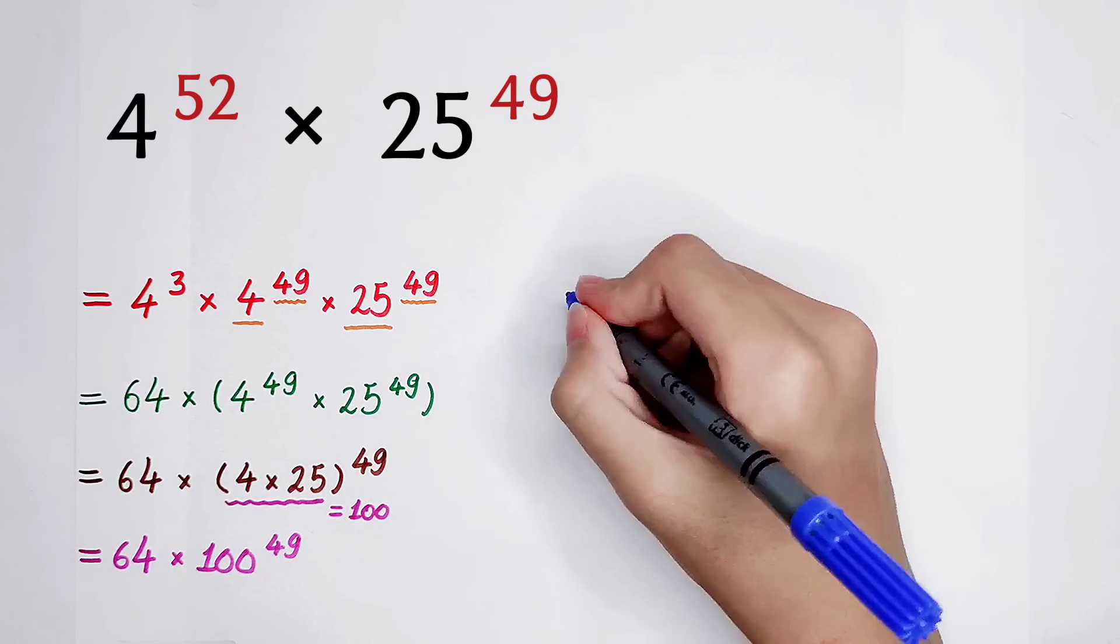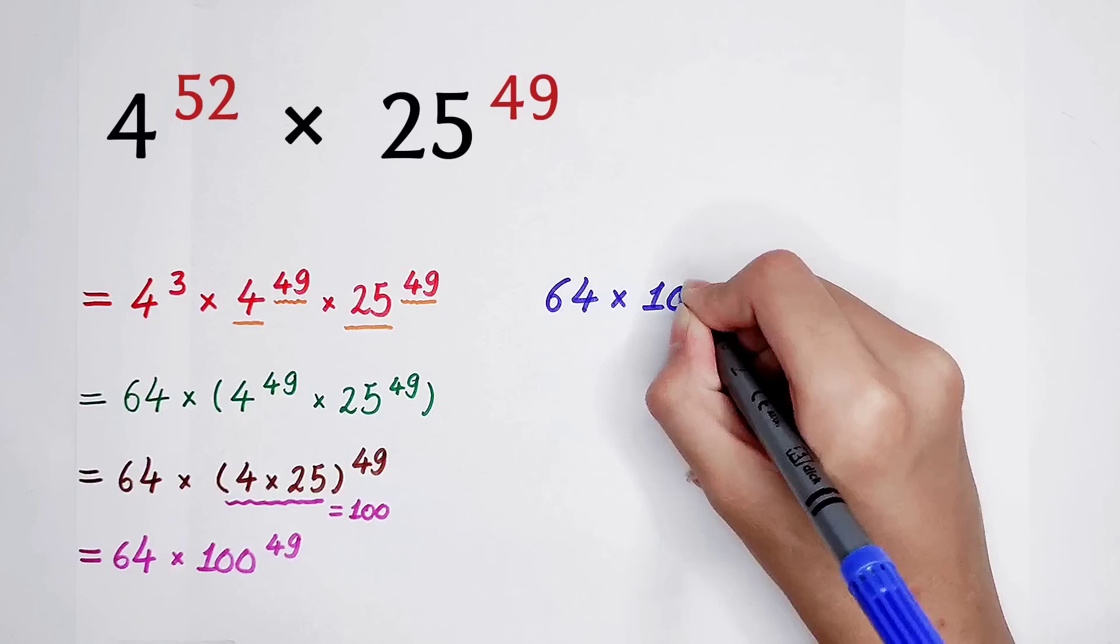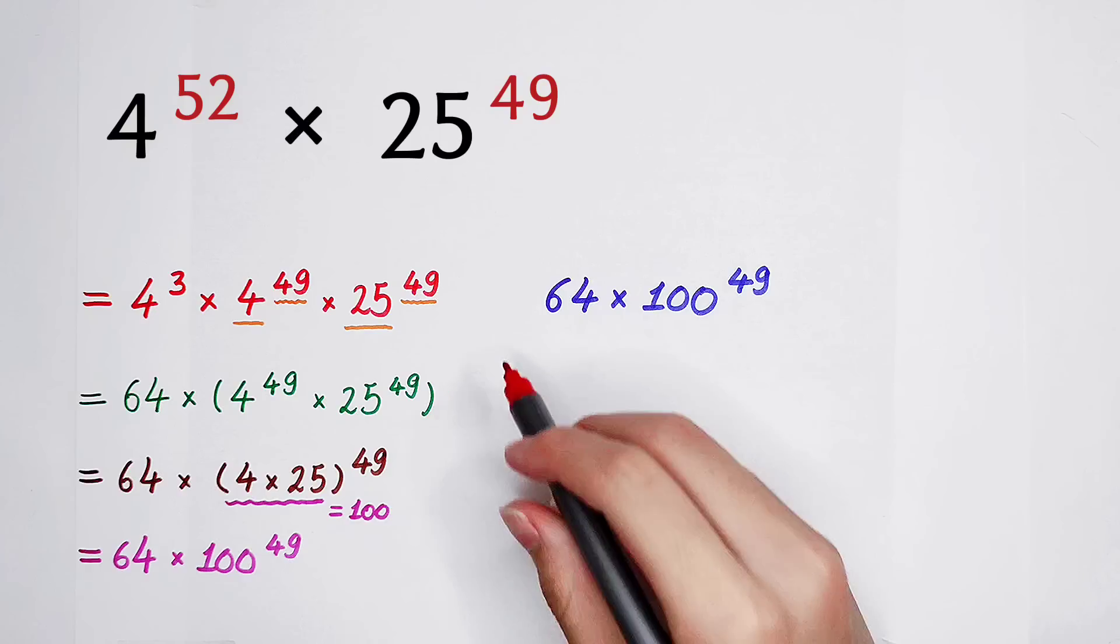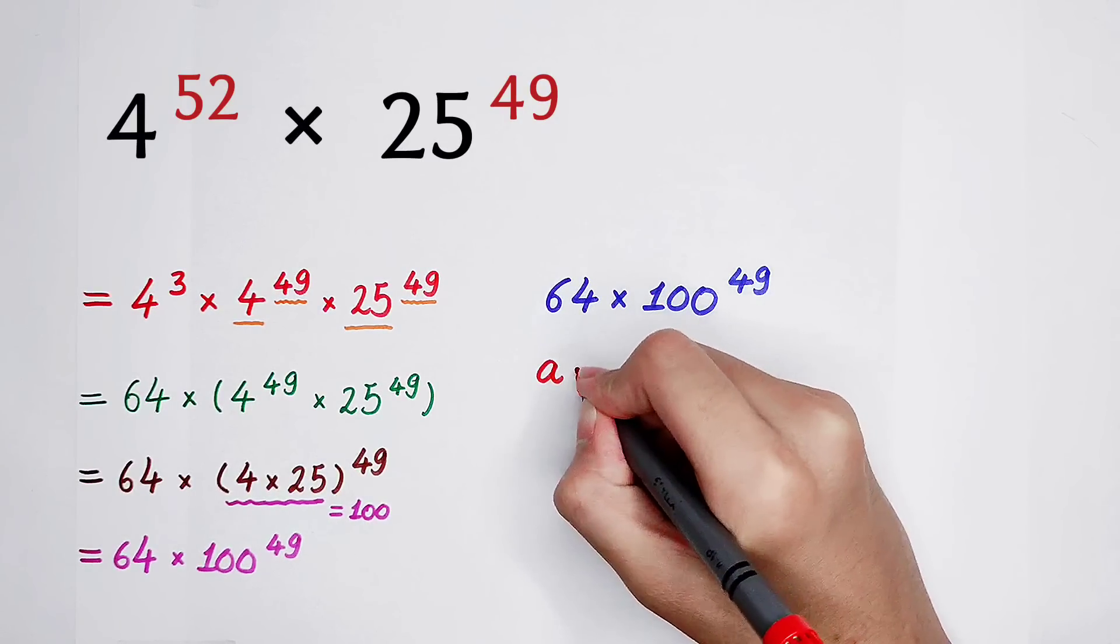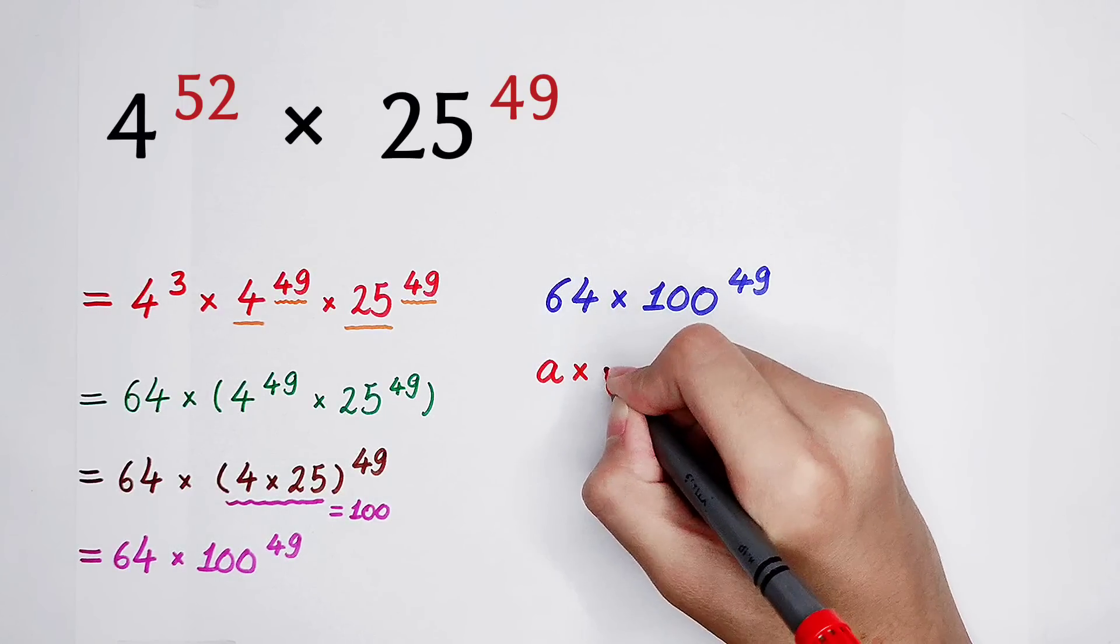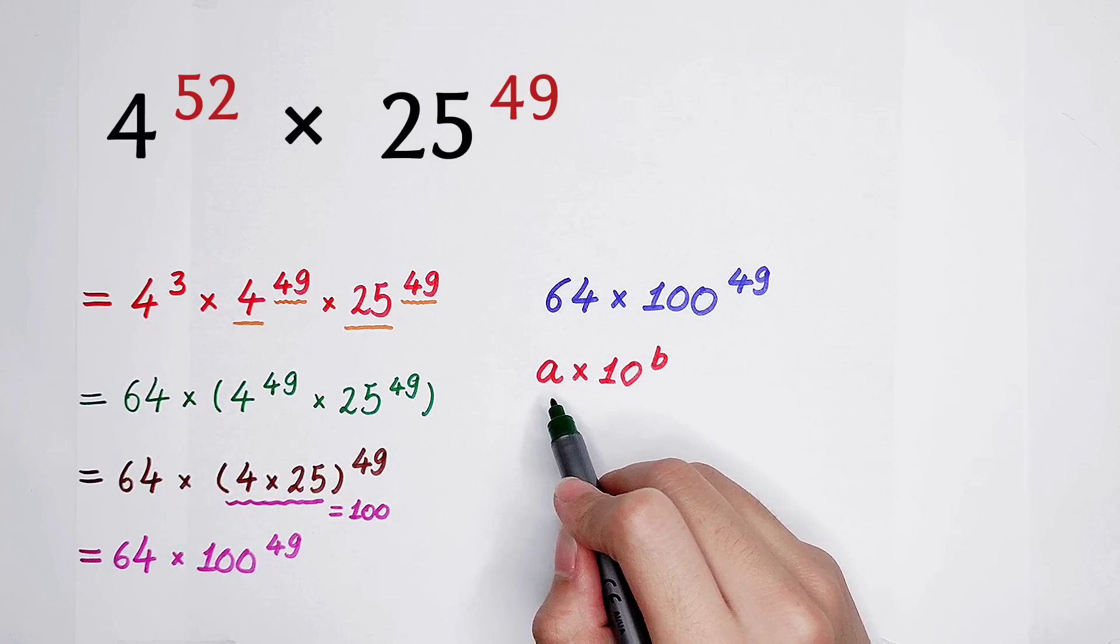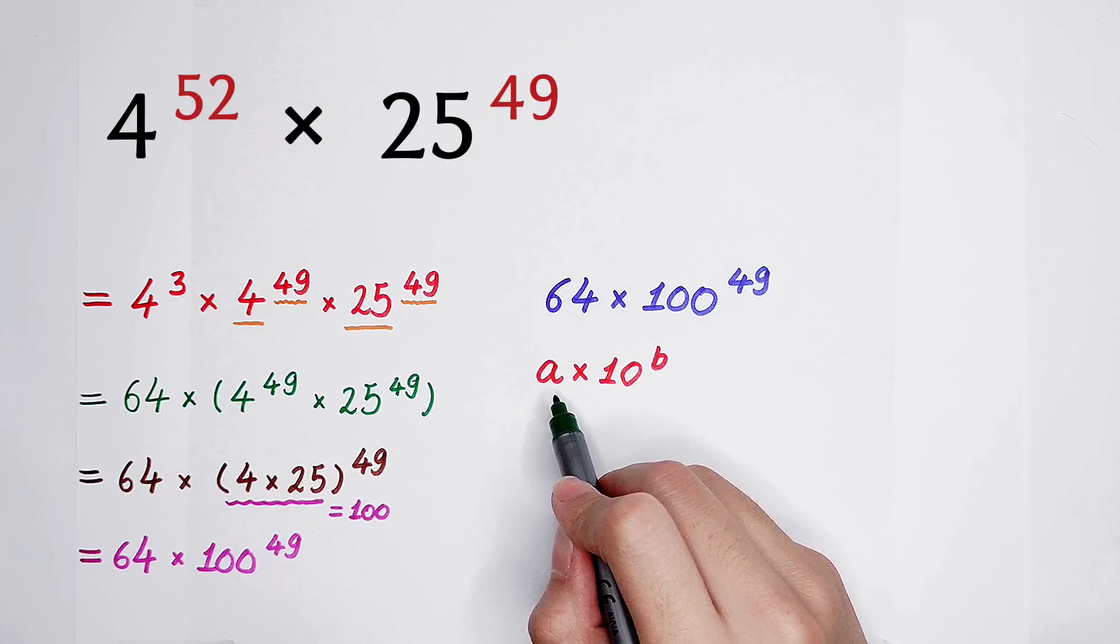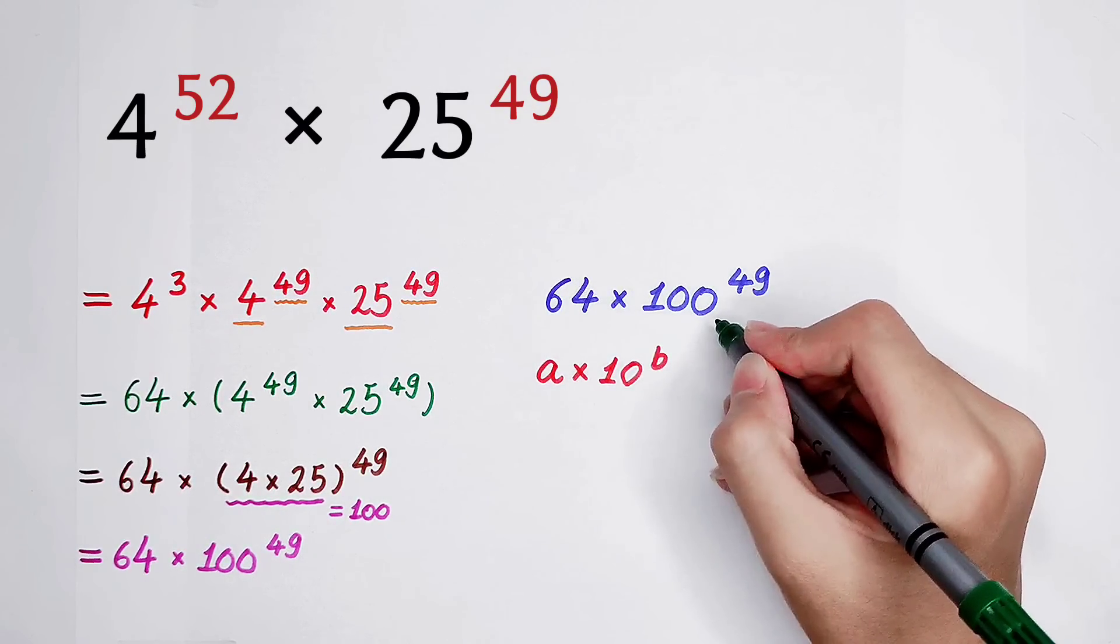Now, 64, then times 100 to the power of 49. I should write it as the form A, then times 10 to the power of B. And here, the A is greater or equal to 1, and it must be smaller than 10. And this B is just an integer. Now, 100.